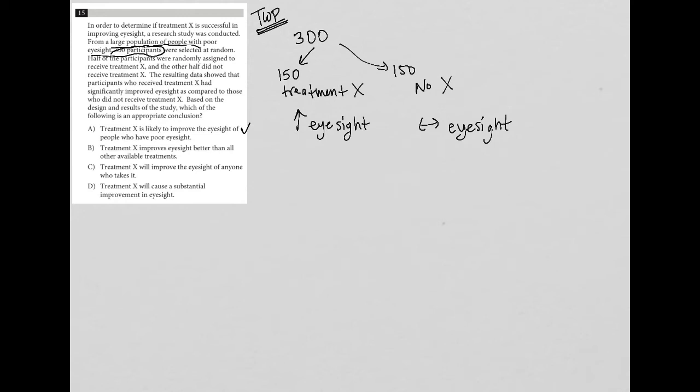Choice B. Treatment X improves eyesight better than all other available treatments. Well, that can't be the case, especially not from this study, because we didn't try any other available treatments. So choice B is out.